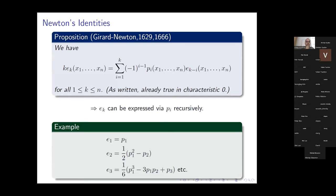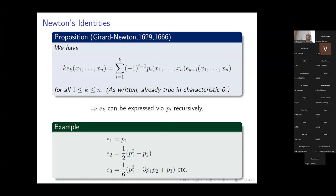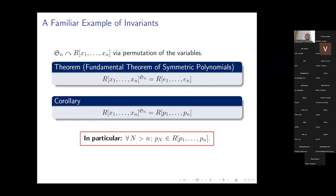We have the Newton identities — or more accurately, the Girard-Newton identities; Girard's work predates Newton's by about 37 years. The important point is that the elementary symmetric functions can be expressed via the Newton functions recursively. The fundamental theorem of symmetric polynomials tells us that the ring of invariants under the action of the symmetric group — where the group acts by permuting the variables — can be described precisely as the ring generated by the elementary symmetric functions.